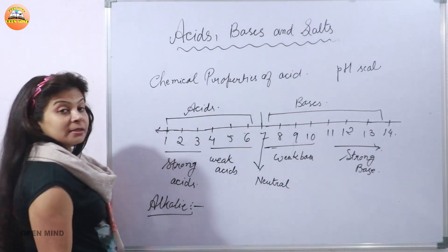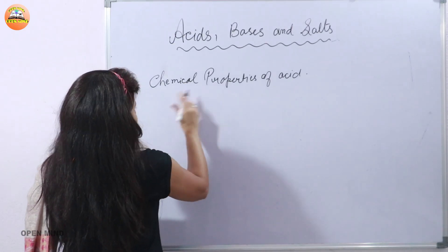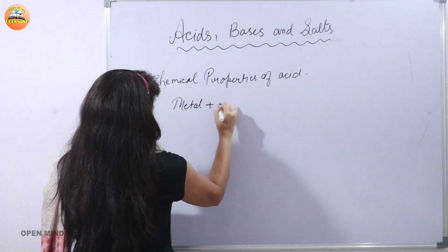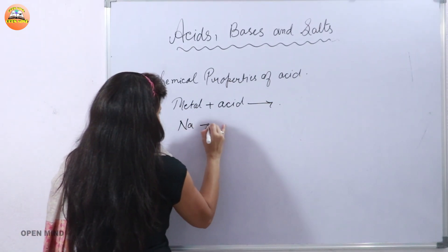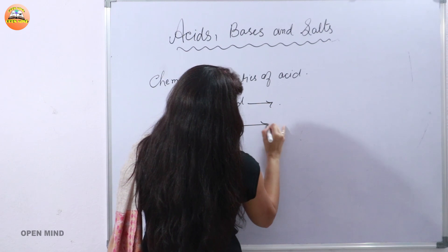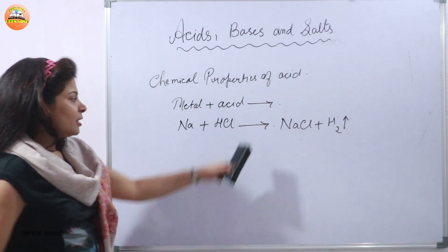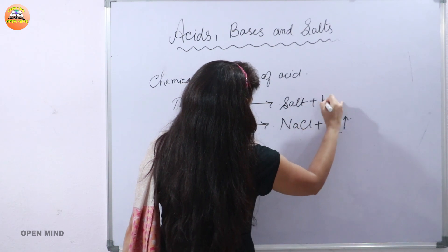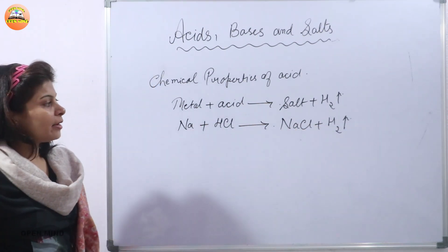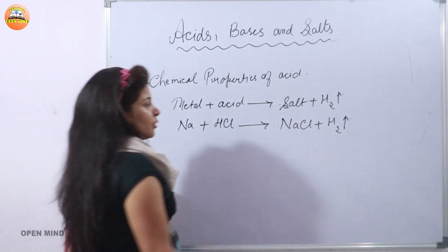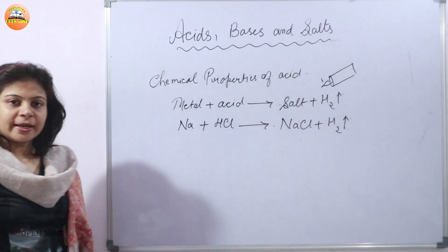Now we will see some chemical properties of acid. The first chemical property is that a metal on reacting with acid will give you a salt and hydrogen gas. For example, take sodium metal and react it with HCl — it gives you NaCl plus H2. That means you get a salt, and hydrogen gas is released. To identify the hydrogen gas, if you bring a burning candle close to this gas, it burns with a pop sound, which indicates the presence of hydrogen gas.